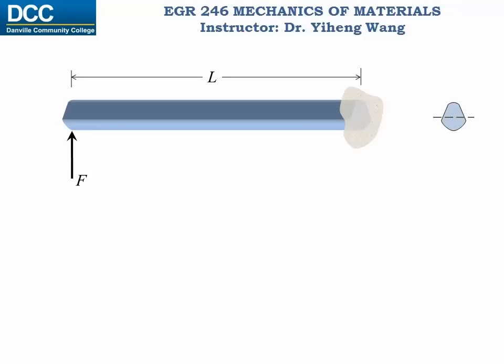Let's look at a very simple structure. We have a straight beam with length L and a given cross-sectional area. One end of this beam is fixed, the other end is subjected to a vertical force F. We can analyze the internal shear force and bending moment in this beam.